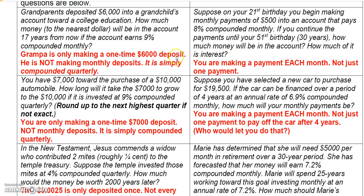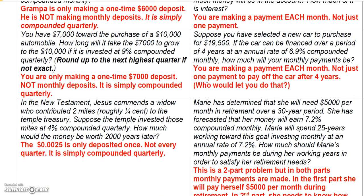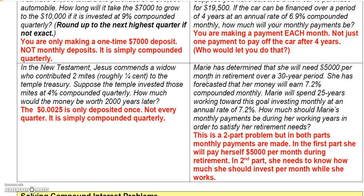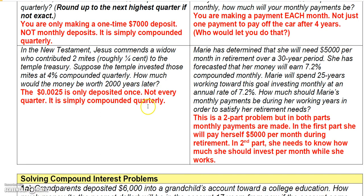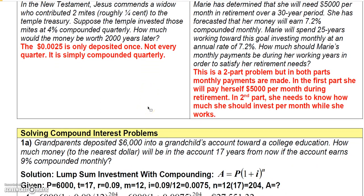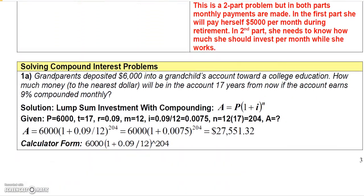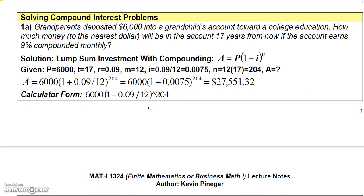Make sure you read these examples and remember the ones on the left are lump sum examples and the ones on the right are annuities. Make sure you understand why the ones on the left are lump sum investments and the ones on the right are annuities.